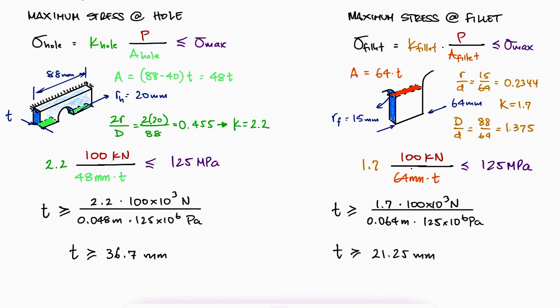If we want neither stress to exceed the maximum allowable stress with that factor of safety, meaning that we want both conditions to be met, the thickness of the plate should therefore be 36.7 mm. Anything lower than that would cause the maximum stress at the hole to be larger than 125 MPa, and therefore the factor of safety would be lower than 2.